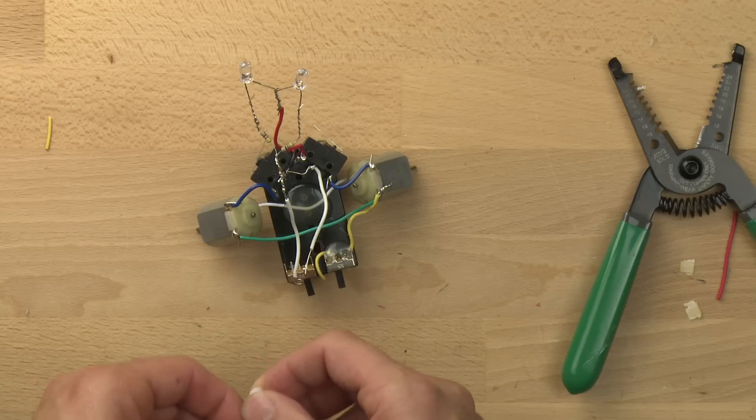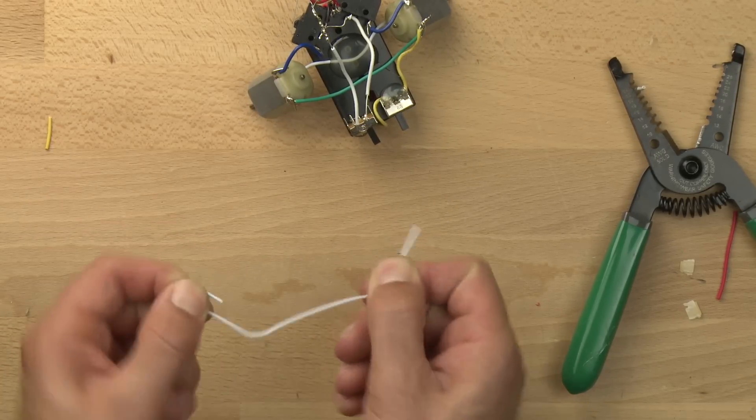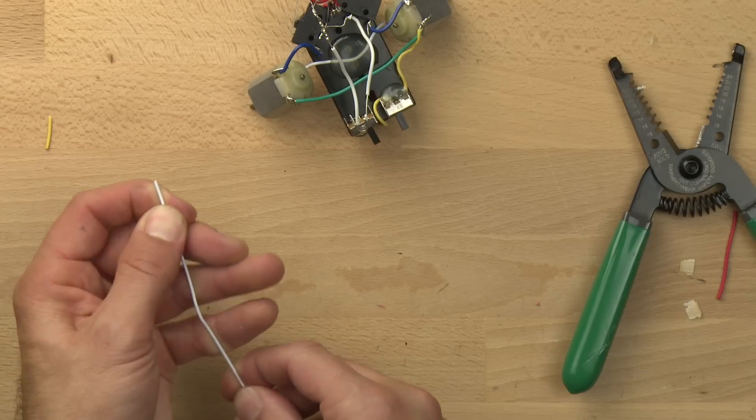I've got some paper clips here. I'm going to bend them and make them into our antenna that we're going to use for the spout bot so it can bounce into things.